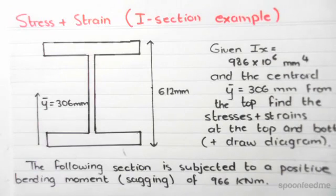Since we have a sagging bending moment, we know that the bottom is in tension, which is positive stresses and positive strains, and the top is in compression, so we have negative stresses and negative strains.